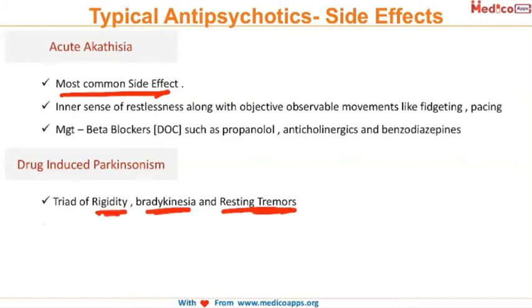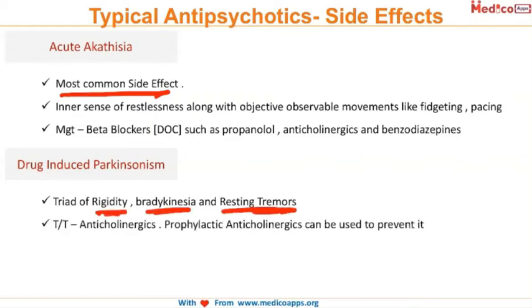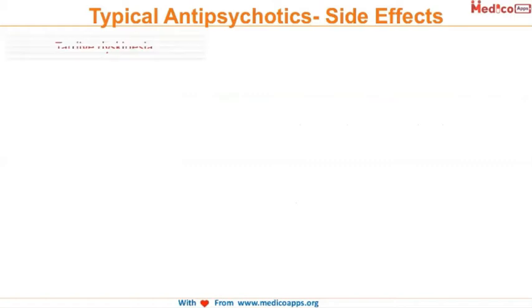Drug-induced parkinsonism presents with the typical triad of rigidity, bradykinesia, and resting tremors. Treatment again involves anticholinergics; biperiden, an anticholinergic, can be given to prevent it.